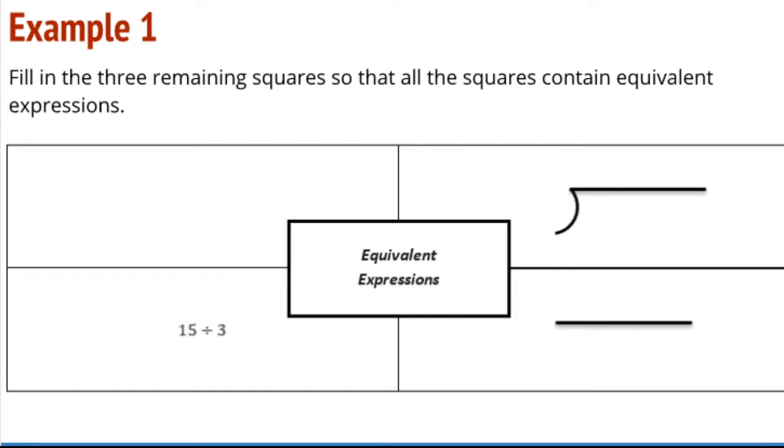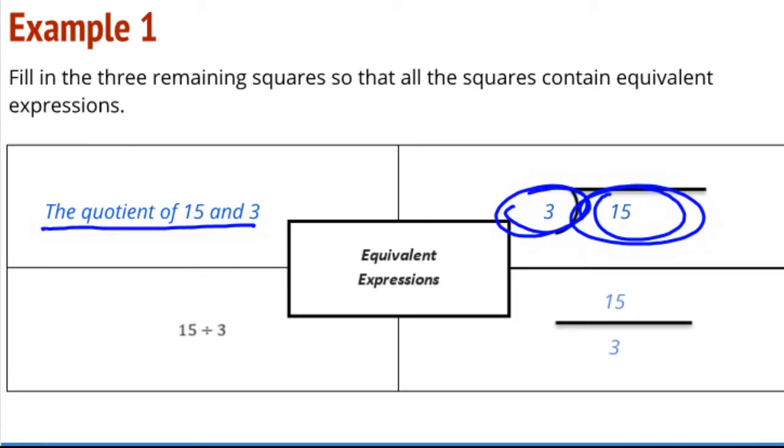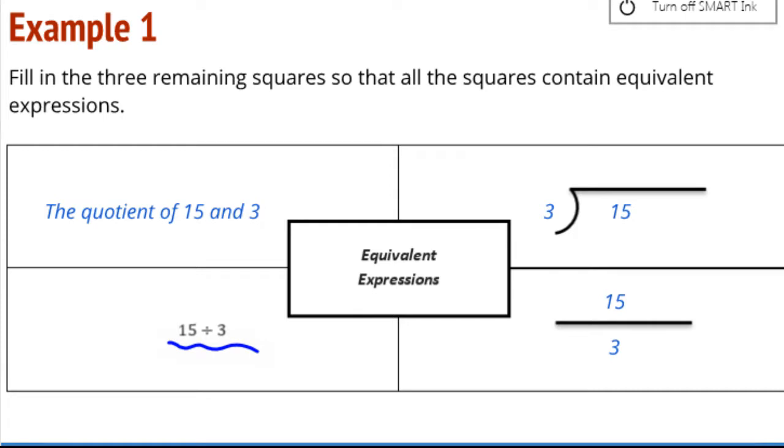This last box is where we write the expression in words. So the quotient of 15 and 3. The dividend is inside the division symbol. The divisor is on the outside. Dividend is the numerator. Divisor is the denominator. So this is completing this chart in a specific situation. We are given a specific expression to work with.